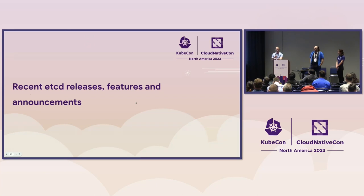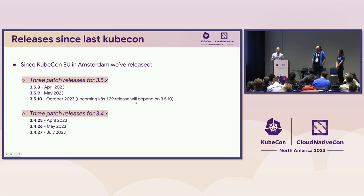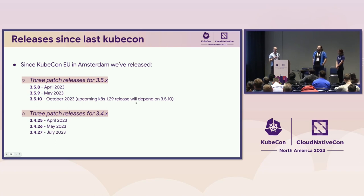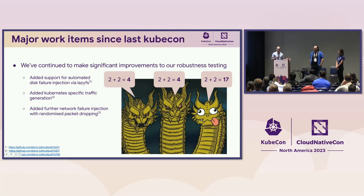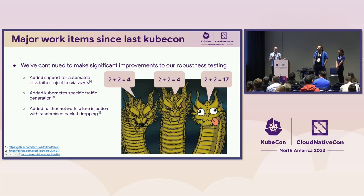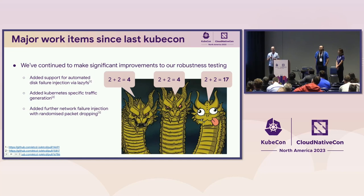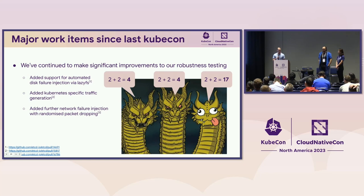Looking at some recent releases: since Amsterdam we've had three patch releases for our 3.5 stable release branch, and the same for 3.4 — with another 3.4 patch release coming very shortly. Robustness testing is a huge focus for us. We've now got support for lazyFS, which is a FUSE-based file system that allows us to inject disk failures, as Merrick was talking about. We now have Kubernetes-specific traffic generation for those robustness tests so we can model what Kubernetes interactions with etcd would look like. We've also got more network failure injection happening.